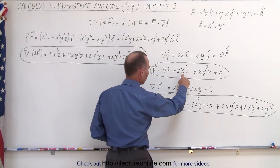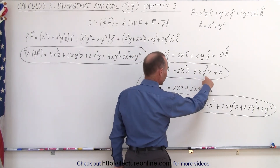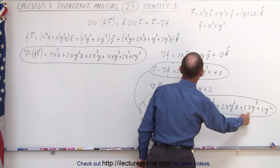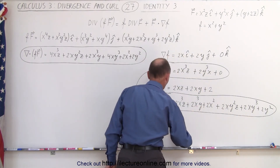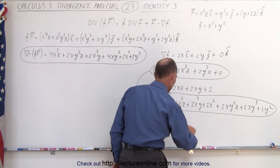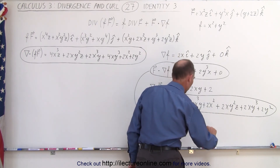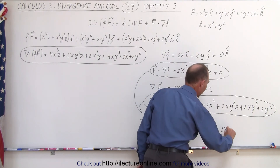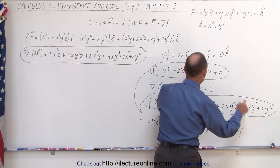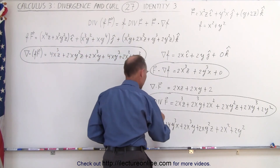Now we add the two right-side terms together. Combining: 2x³z + 2x³z = 4x³z; 2y³x + 2y³x = 4xy³; we have 2x³y; plus 2xy²z; and then 2x² + 2y² combined. This is the complete sum of the right-hand side.